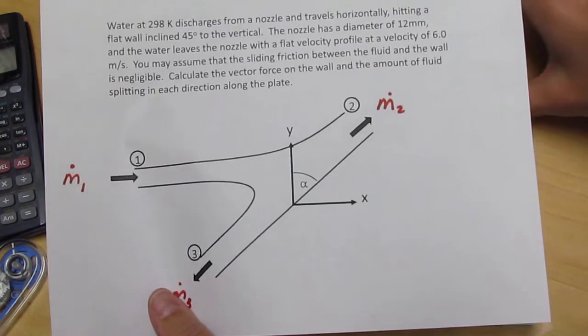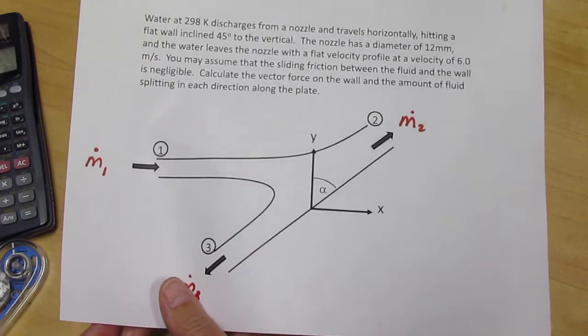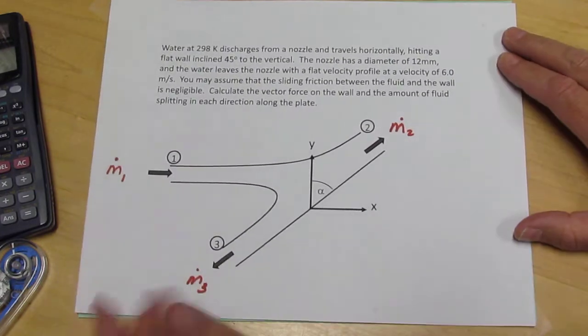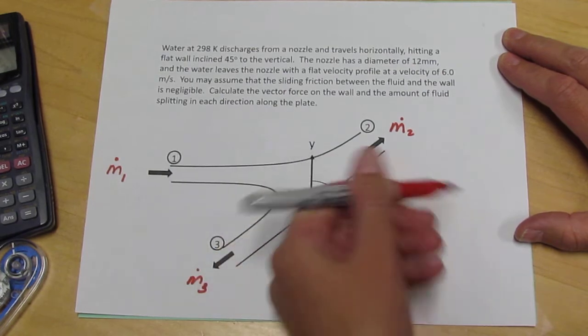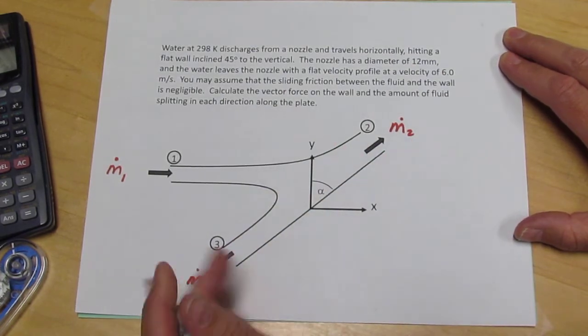So our problem now is to calculate that split and to calculate the force on the wall, which is a vector in some way in this direction, maybe a little down, maybe a little up. We're not really sure at this moment.